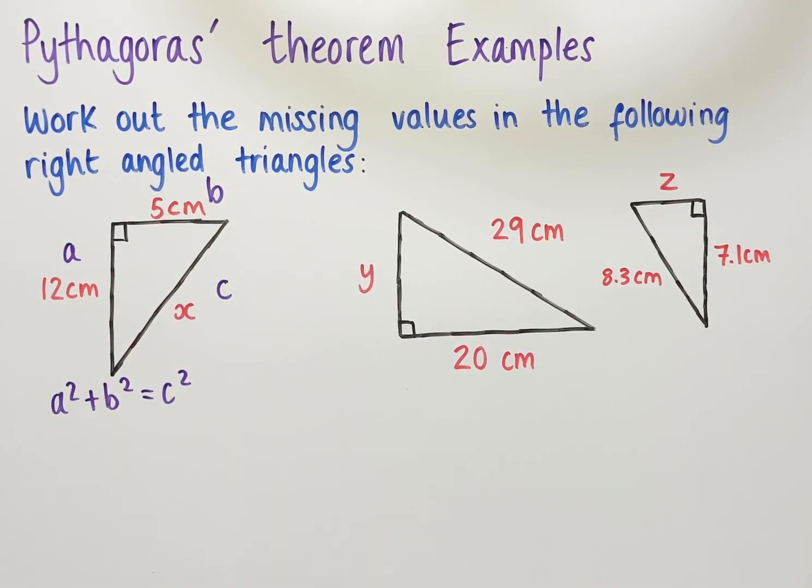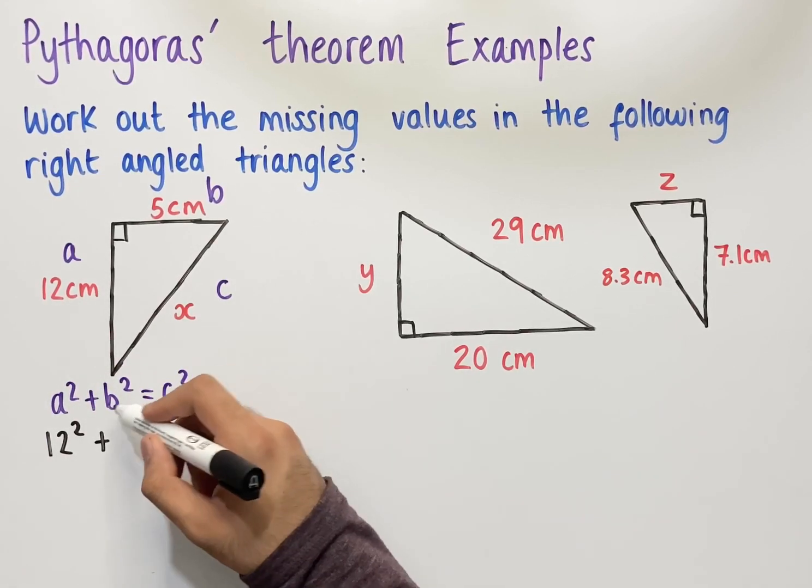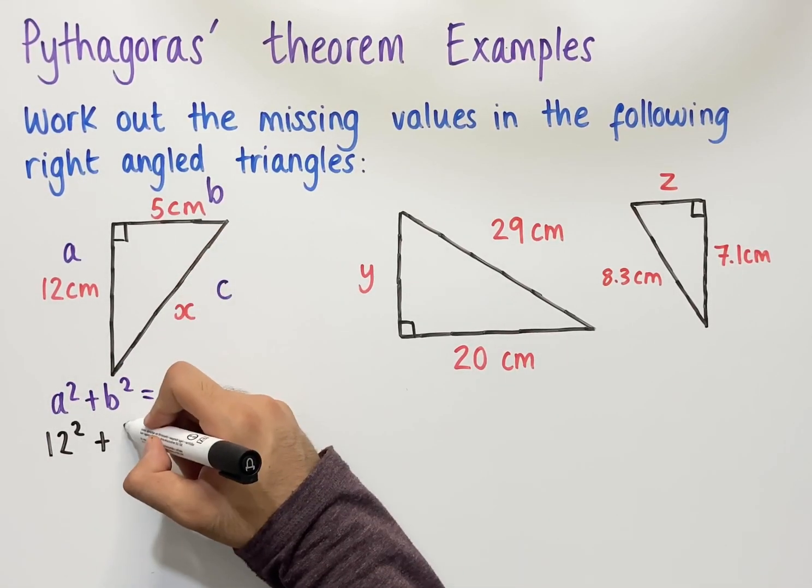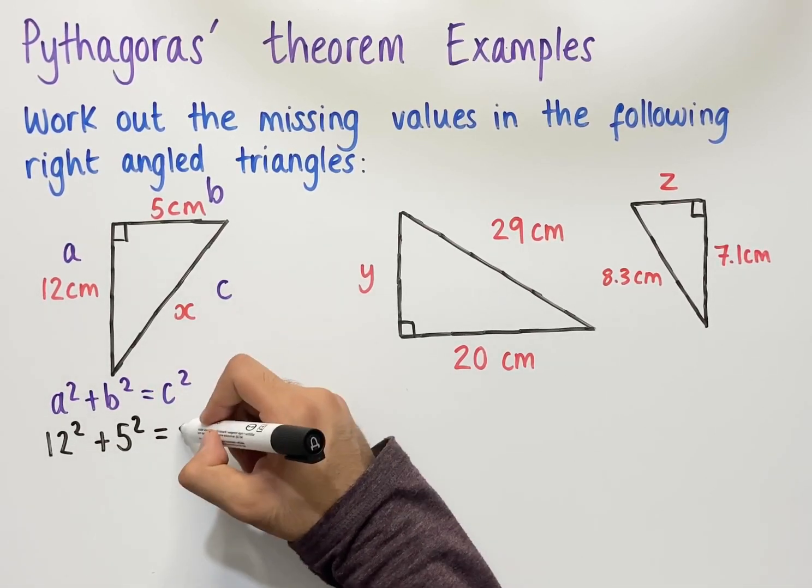Next thing is to substitute our values into the theorem. So we have that a squared, in this case 12 squared, plus b squared, which in this case is 5 squared, equals c squared, which in this case is x squared.